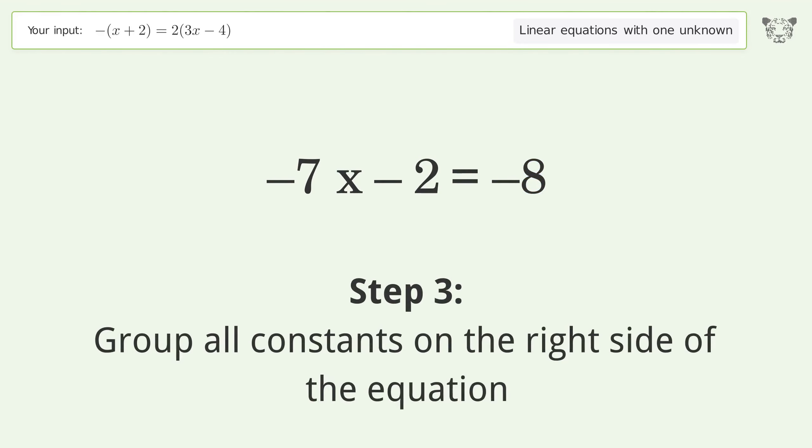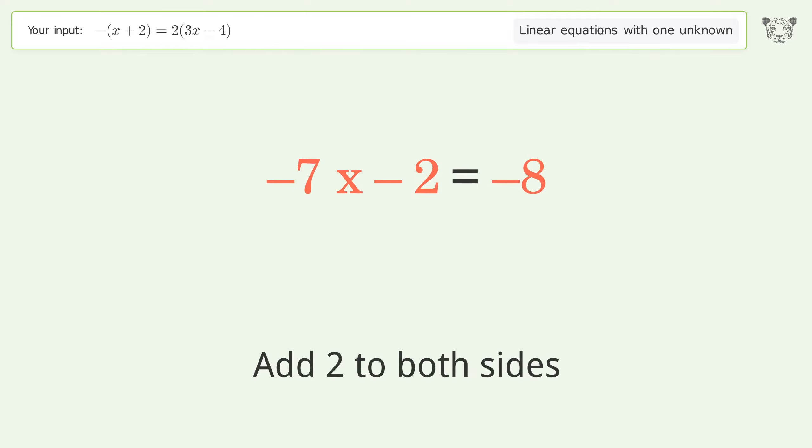Group all constants on the right side of the equation. Add 2 to both sides. Simplify the arithmetic.